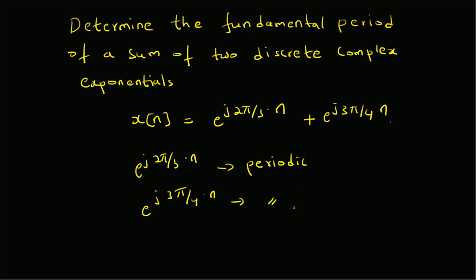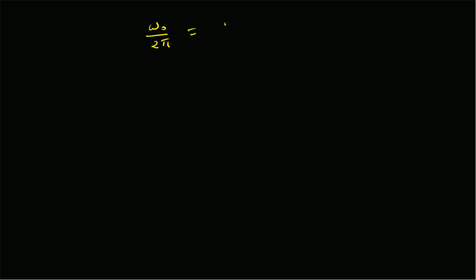We can find their respective periods. The question is: what is their common period, i.e., the fundamental period of x[n]? Recall that for a discrete complex exponential to be periodic, the condition is that ω₀/2π must equal m/N, a rational number.